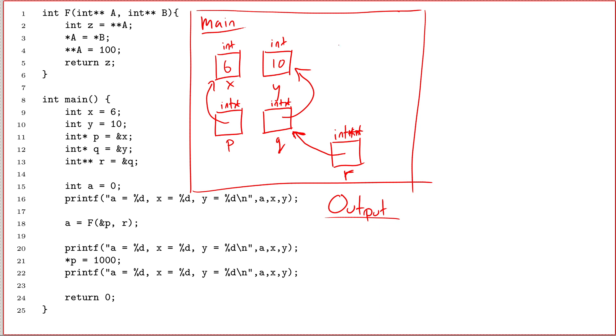And then line 15, I create a variable a, and I set its value to 0. All right, line 16, first line of output. I mean, if I'm going to do badly on the question, that's one thing, but I should be able to get the easy mark for the first line of output. So first line of output, a equals 0, x equals 6, and y equals 10.